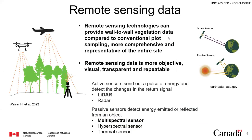When I started thinking about this three years ago, the idea was: can we use remote sensing to improve our current reclamation monitoring? Not to replace it, but to really enhance it. Remote sensing really stands out as a possible solution because it provides that wall-to-wall vegetation data compared to traditional plot sampling on the ground. It certainly allows you to have more comprehensive and representative data for the entire one-hectare site. We also know that remote sensing data is more objective and repeatable, which allows the auditing process to expand beyond the small portion of sites currently being audited by the Alberta Energy Regulator.